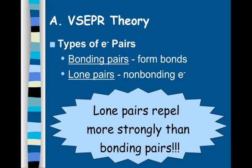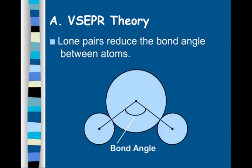So what does that mean? Lone pairs are going to push further on the angles. If you start with that straight angle with three atoms and add lone pairs into the mix up top, you end up with the bond angle decreasing into a bent shape — it's crunching closer together because of the lone pair.